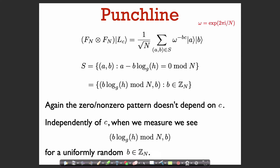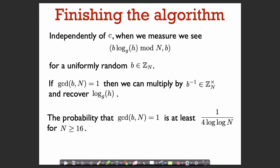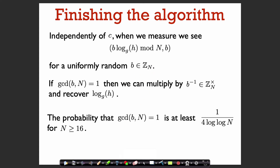Now the quantum part of the algorithm is done and we just have classical post-processing. After we do the Fourier transform and measure, we see an element of the form b times log base g of h mod n, comma b for b uniform in Z_n. If b is relatively prime to n — meaning b is invertible in Z_n* — then we can multiply by its inverse. Multiplying the first element by b inverse gives us log base g of h, which is exactly what we want.